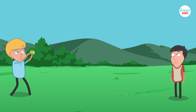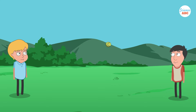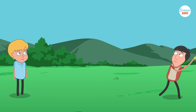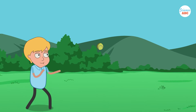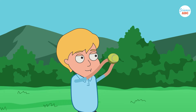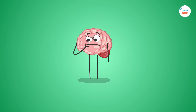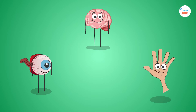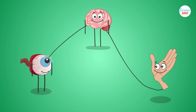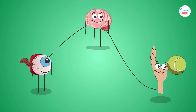Imagine yourself in the middle of a game of catch. A player throws the ball towards you, and as the ball jets closer, you quickly recognize where to position your hand in order to catch the ball safely. Have you ever wondered how your brain is able to so quickly make that decision? How does information flow so fast from your eyes to your brain and back to your hand in order to successfully catch the ball?